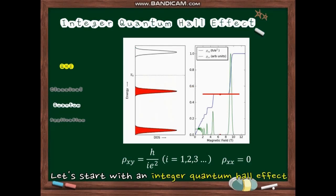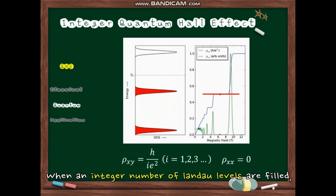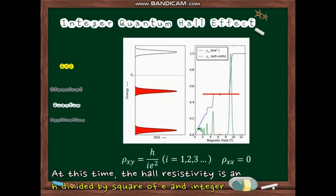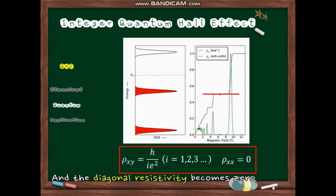Let's start with integer quantum Hall effect where the filling factor is an integer. When an integer number of Landau levels are filled, energy gap between the bottom state and the excitation state occurs. At this time, the Hall resistivity is H divided by square of E times an integer, and the diagonal resistivity becomes zero.